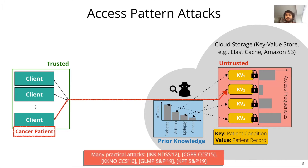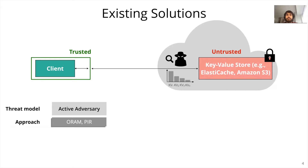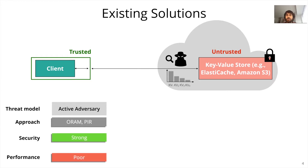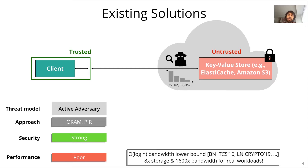Several recent papers have shown that an adversary can exploit such access pattern attacks in real-world deployments. Most prior work on preventing such attacks has focused on a strong active adversary model, where the adversary can not only observe access patterns but also inject accesses of its own. The most predominant of these approaches are oblivious RAM and private information retrieval. While such approaches provide strong security, they have prohibitively high performance overheads, making them impractical for most cloud deployments. In fact, many recent works have shown a log n lower bound on ORAM bandwidth overheads, with extremely high bandwidth and storage overheads for real-world workloads.